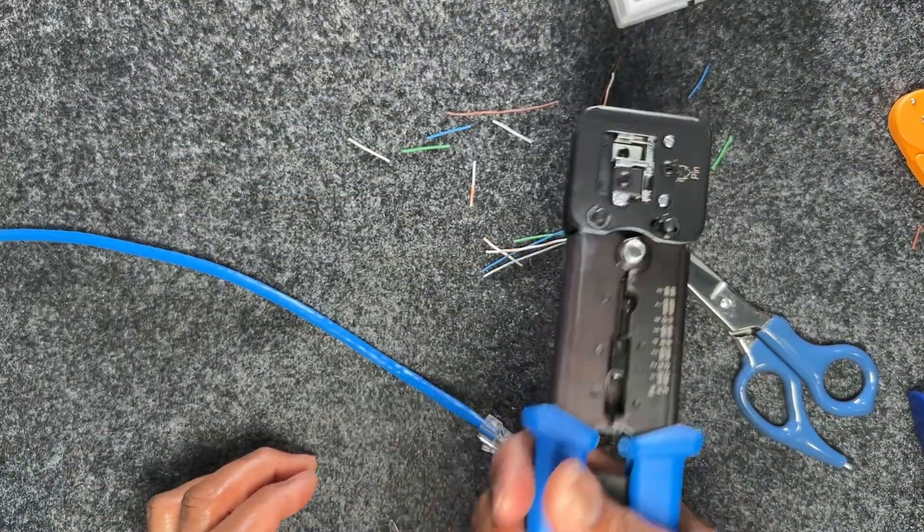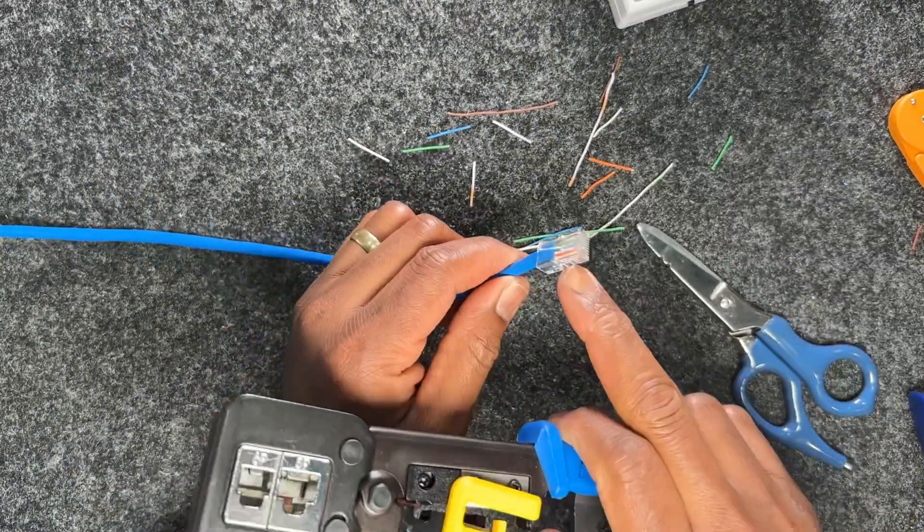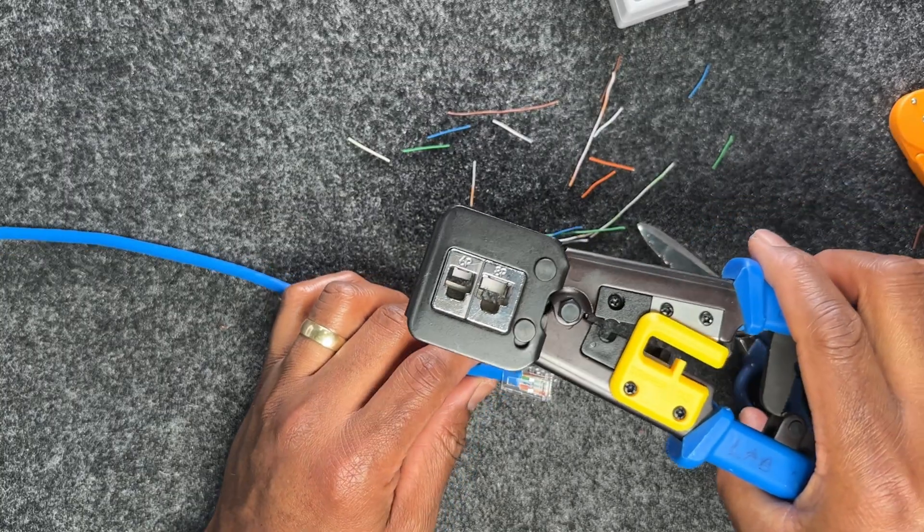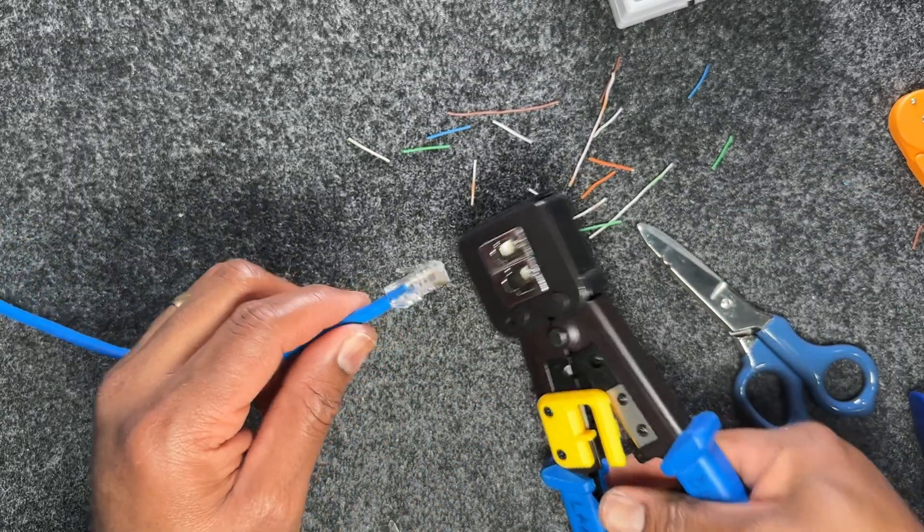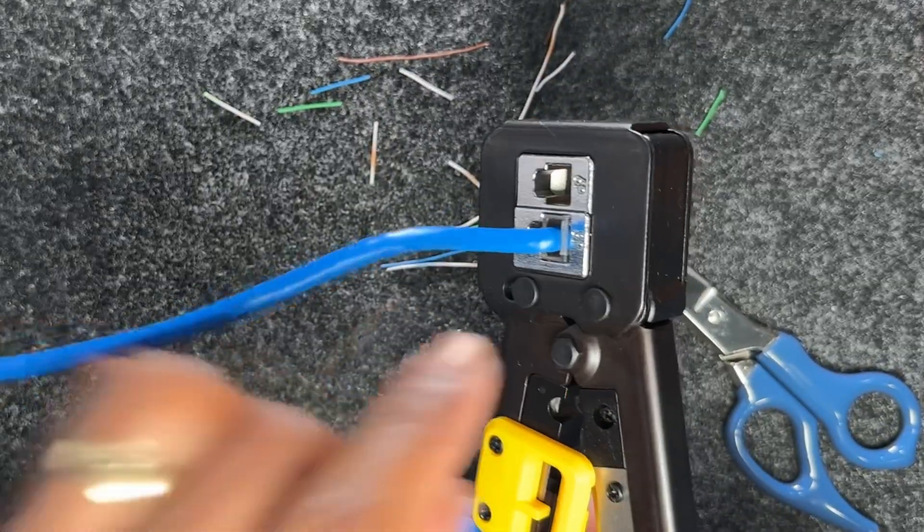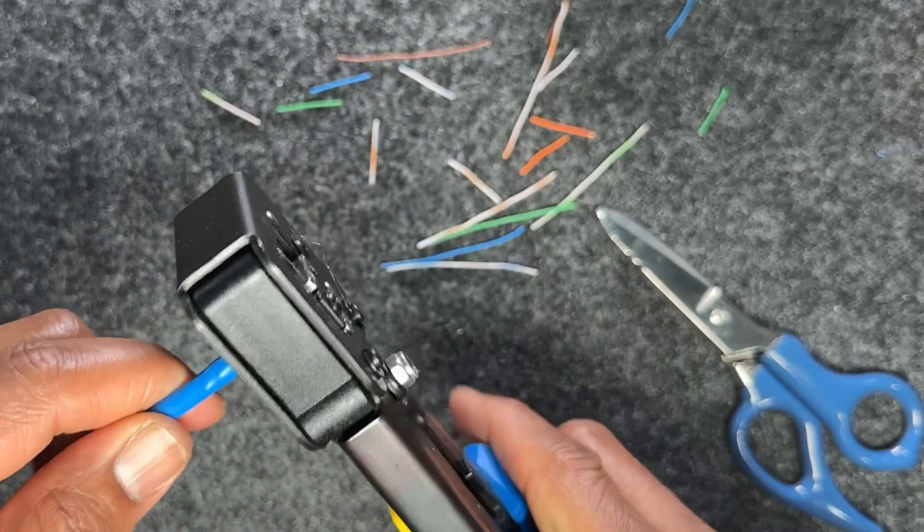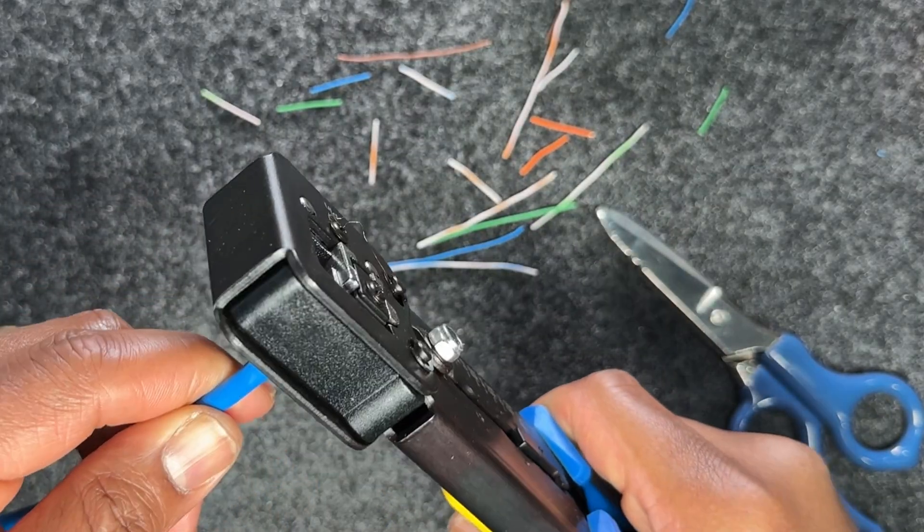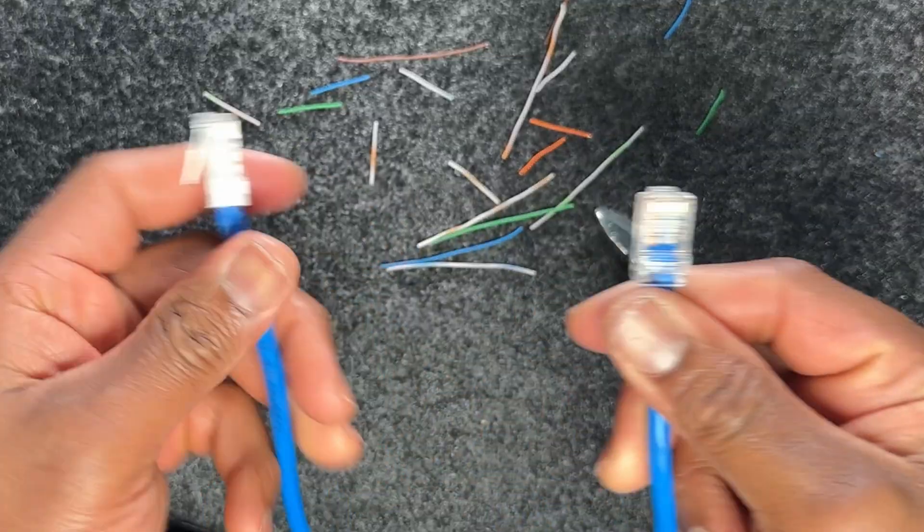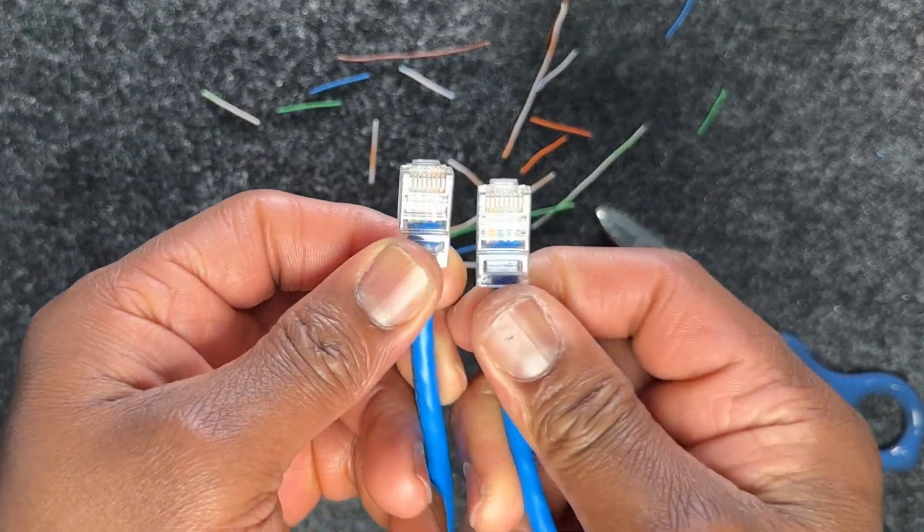Just by squeezing it in one more time, I can grab my crimp tool. Even though this is a non-pass-through, I can still use a pass-through crimp tool to do the work. Set that in. It's all flush. Give it a quick crimp, and once you take it off, this is what you have.